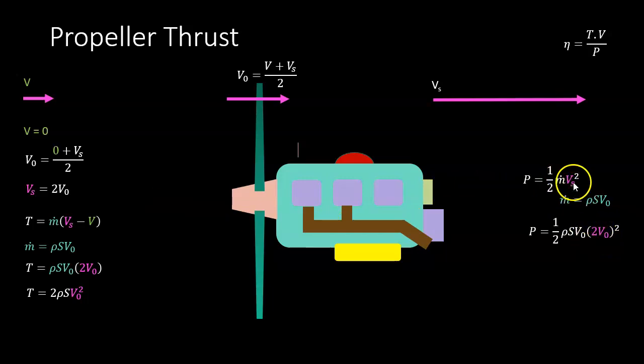If I plug those values back into the equation, Vs is 2V0 squared, and instead of m we use ρSV0. That becomes 2ρSV0³, and if I transpose that I get an expression for V0.